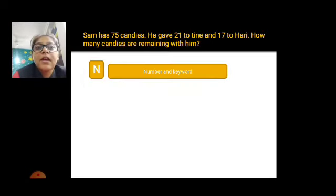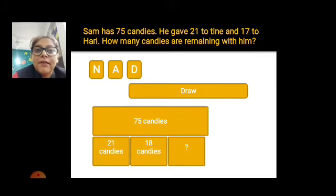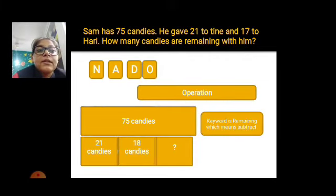Right, now here is Sam has 75 candies, he gave 21 to Tina and 17 to Hari. So numbers are 75 and 21 and 17 and keywords is remaining. Remaining is the keyword. Now what is asked, how many candies are remaining with him? So here is the 75 candies, 21 give to Tina and 18 give to Hari.